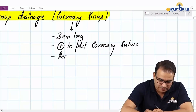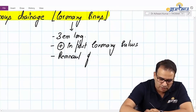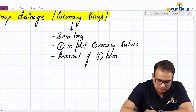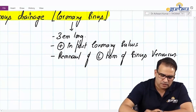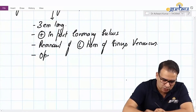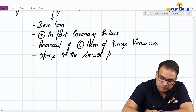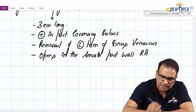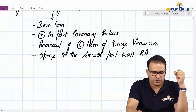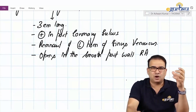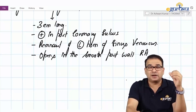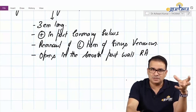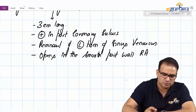Developmentally, the coronary sinus is a remnant of the left horn of the sinus venosus. This coronary sinus opens into the smooth posterior wall of the right atrium. So to summarize the introductory points: it's a venous sinus around three centimeters long, present on the posterior side in the atrioventricular groove, it's a remnant of the left horn of the sinus venosus, and it opens into the smooth posterior wall of the right atrium.